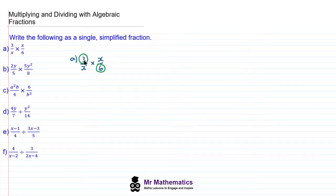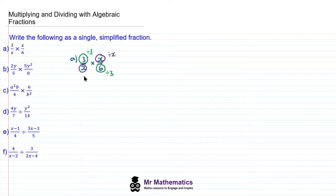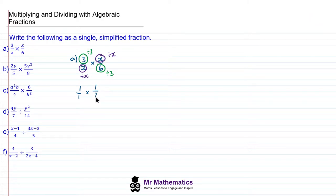The highest common factor of 3 and 6 is 3, so we'll divide both by 3. Looking at the other pair, we have an x here and an x here, and clearly these two will both divide by x. So we can rewrite this product as 3 divided by 3, which is 1, x divided by x, which is also 1, multiplied by x divided by x, which again is 1, and 6 divided by 3, which is 2. So this product is 1 half. So 3 over x multiplied by x over 6 simplifies to make 1 half.